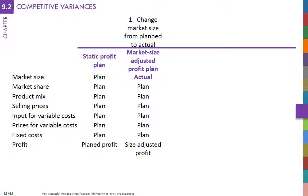The difference in profits that a particular factor explains is called variance. Variances are labeled as favorable if profits go up because of changing this variable from planned to actual, or unfavorable if profits go down.